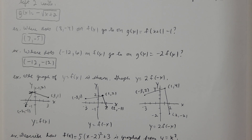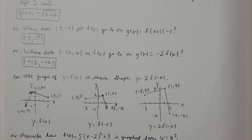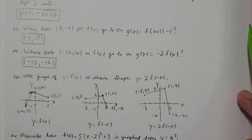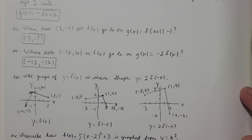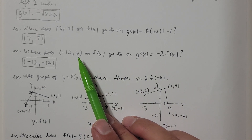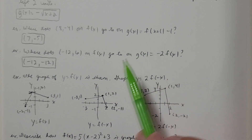Here's another problem: where does the point (-12, 6) on f(x) go on g(x) = -2f(x)? I have a vertical stretch and I'm flipping the graph upside down because of that negative two. All I'm going to do is multiply the y-value by the stretch factor. So I multiply 6 by -2, bringing me to the point (-12, -12).